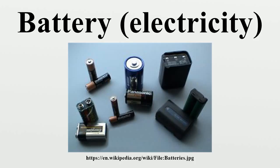When a battery is connected to an external circuit, electrolytes are able to move as ions within, allowing the chemical reactions to be completed at the separate terminals and so deliver energy to the external circuit.